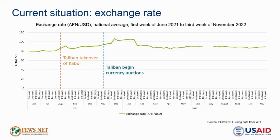One indicator that illustrates this trend is the exchange rate. The graph on this slide shows the national average exchange rate since June 2021, and as you can see, the exchange rate has been generally stable throughout 2022, supported by ongoing foreign currency auctions. The stabilization of the economy and the significant reduction in conflict since the political transition in August 2021 has supported some recovery in business and livelihood activities. According to a World Bank private sector rapid survey, more than three quarters of surveyed firms were operational in June 2022, up from two thirds in November 2021.